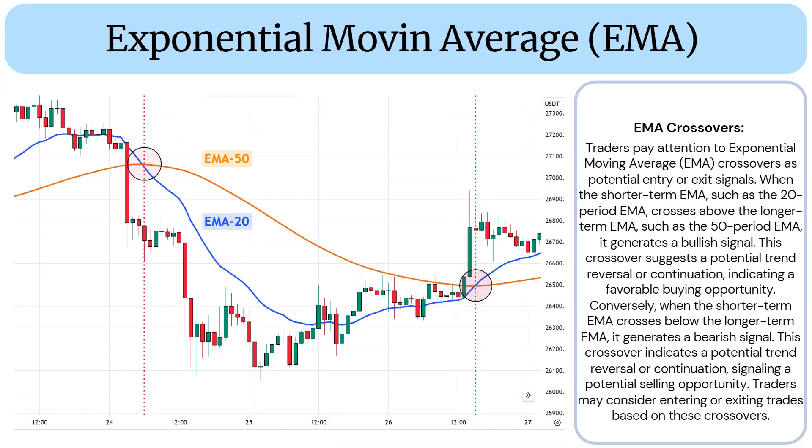EMA Crossovers: Traders pay attention to EMA crossovers as potential entry or exit signals. When the shorter-term EMA, such as the 20-period EMA, crosses above the longer-term EMA, such as the 50-period EMA, it generates a bullish signal. This crossover suggests a potential trend reversal or continuation, indicating a favorable buying opportunity.